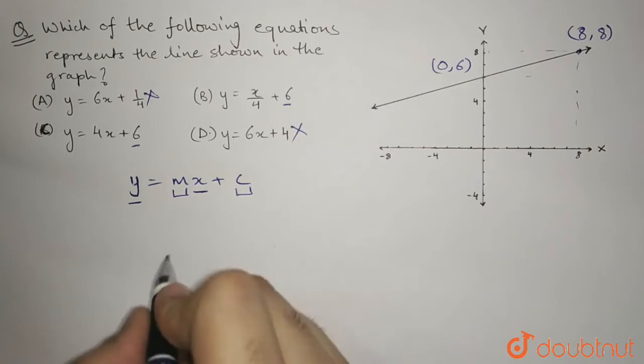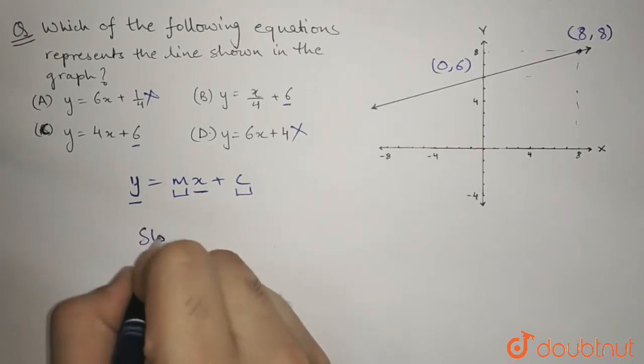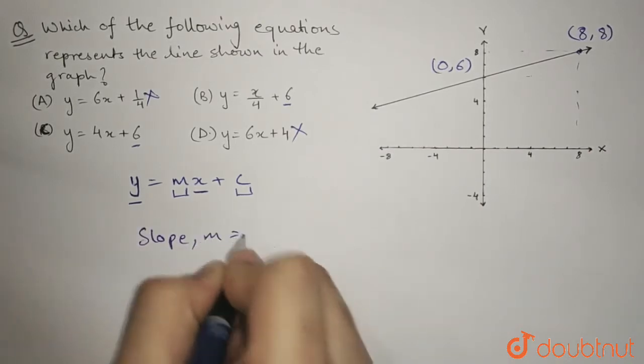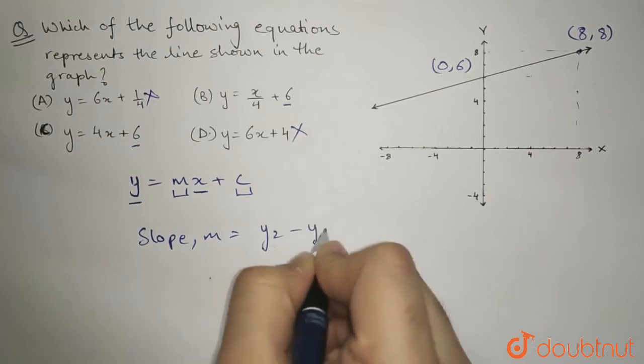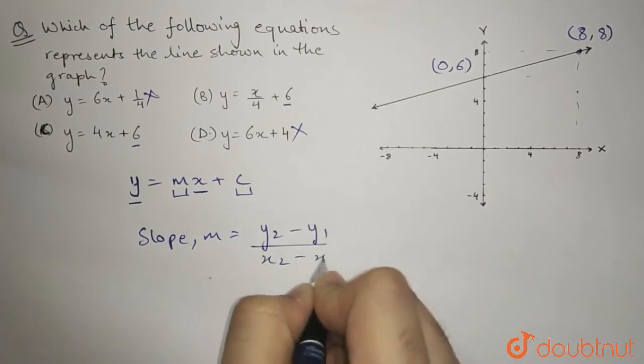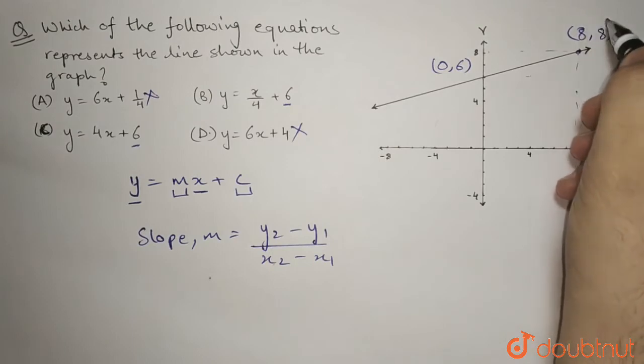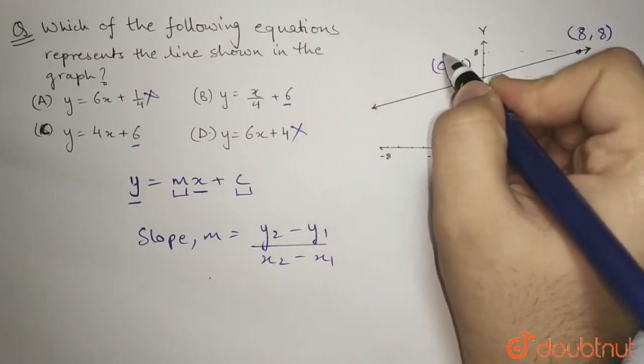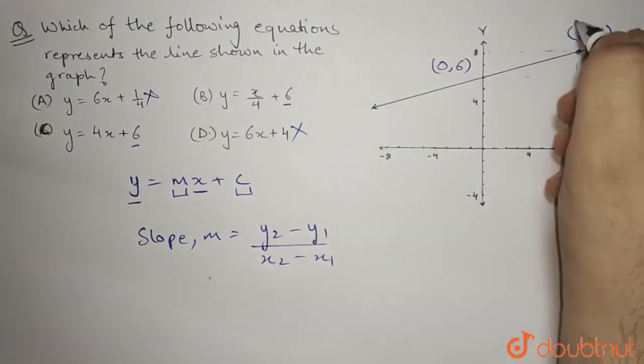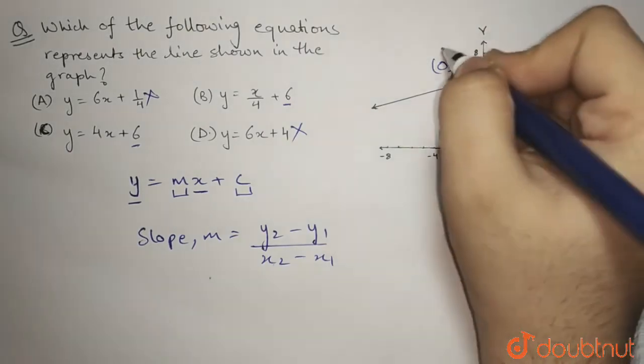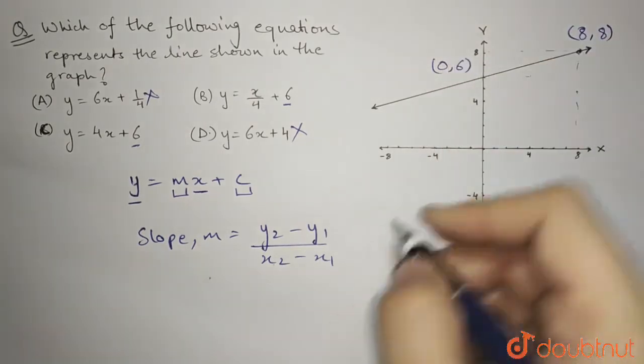So we can apply this formula of slope. Slope is equal to y2 minus y1 divided by x2 minus x1. So this is x2 comma y2 and x1 comma y1.